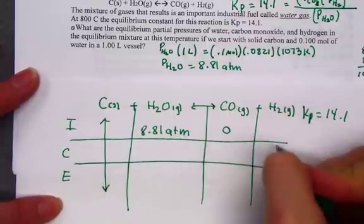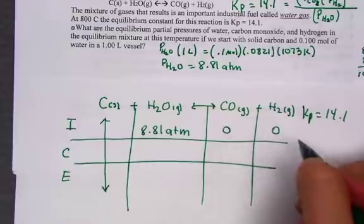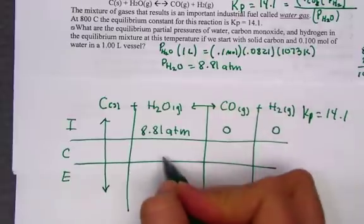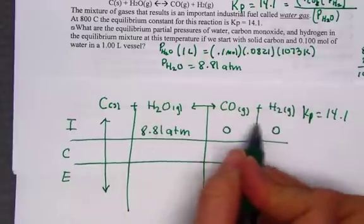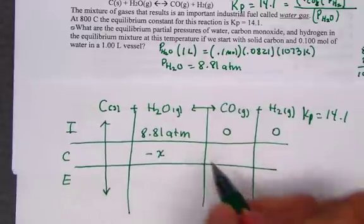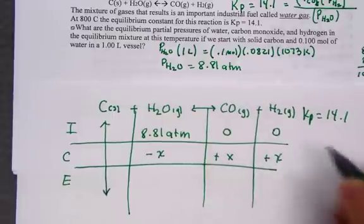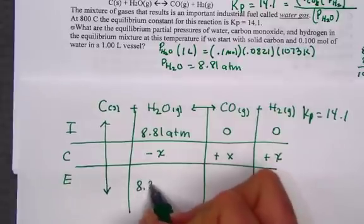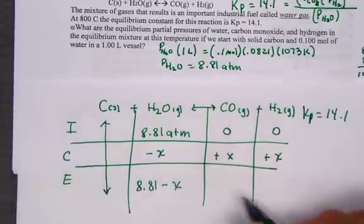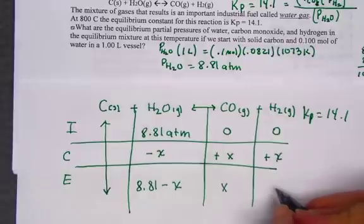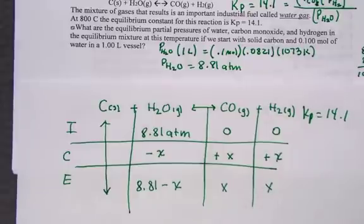The initial concentration or pressure units for the products is zero. Let's suppose all of the coefficients are indeed one, so the value of water goes down by a value of x. And the two products get made to the value of x. So water would be, at equilibrium, 8.81 minus x. Carbon monoxide has a value of x, and hydrogen has a value of x. We have 8.81 minus x, x, and x, the values of those reactants and products.